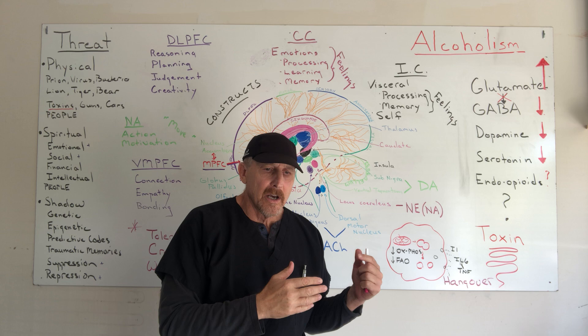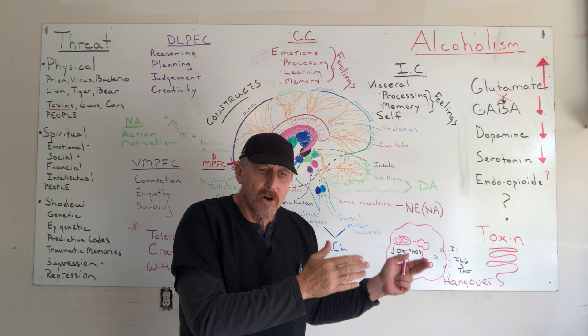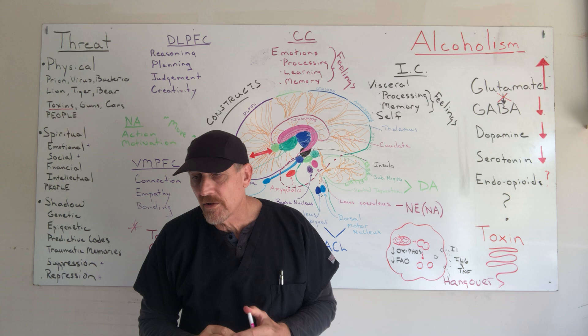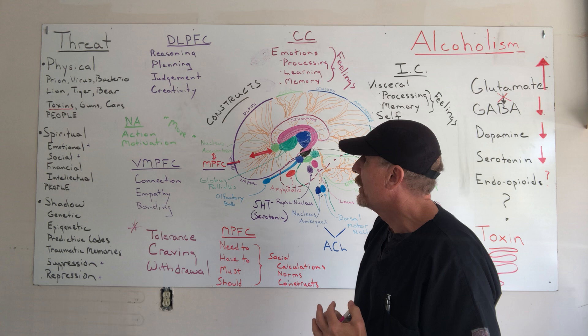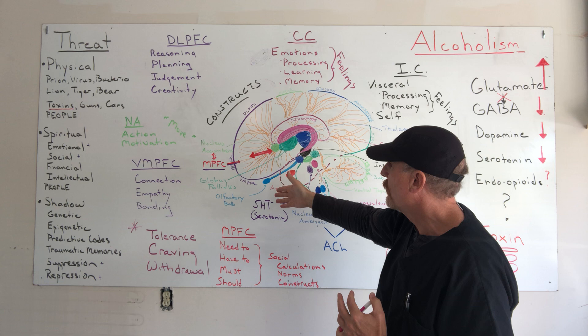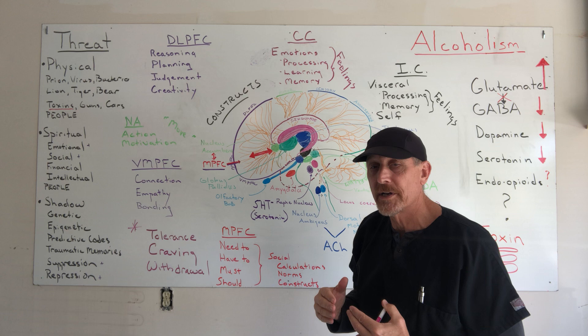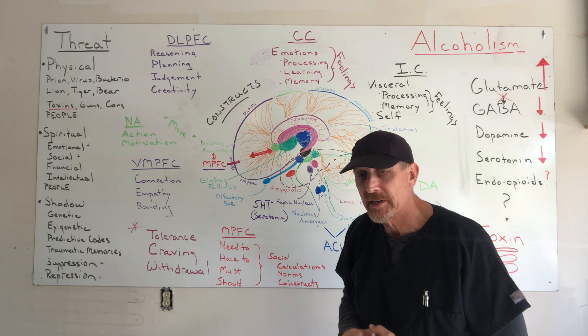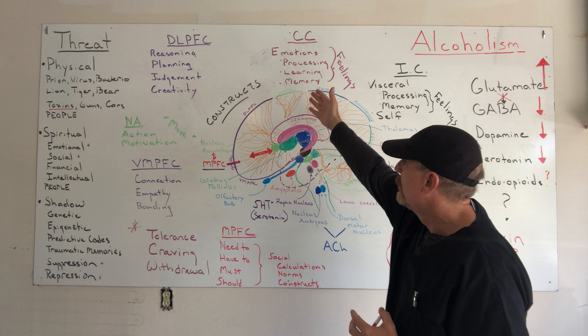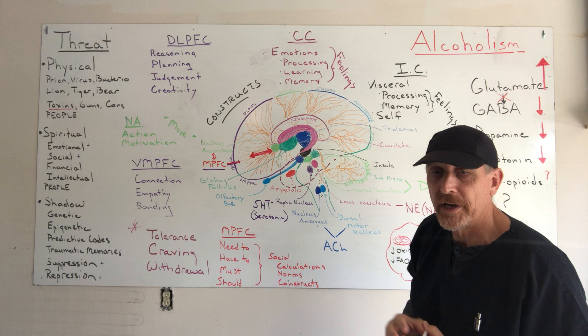Let's quickly summarize what we discussed about acute alcohol intoxication, since it has relevance to chronic use as well. All toxins stimulate a defense response in the body, and part of that defense response is resource allocation — prioritizing resources. Certain functions tend to get turned off when we're in threat mode, and alcohol does a very nice job of turning down prefrontal cortex function.